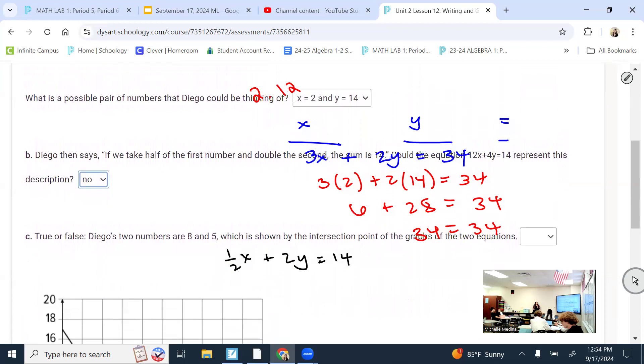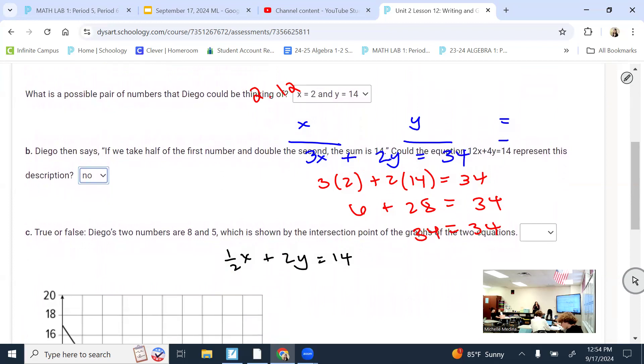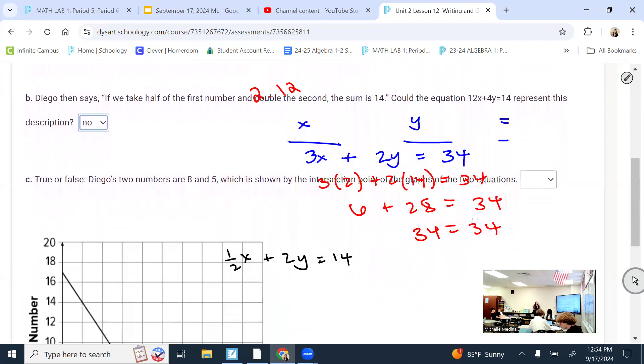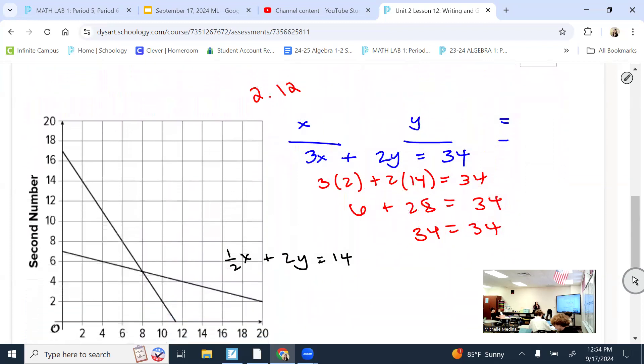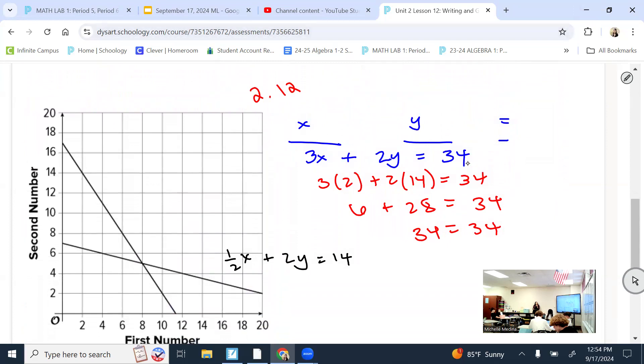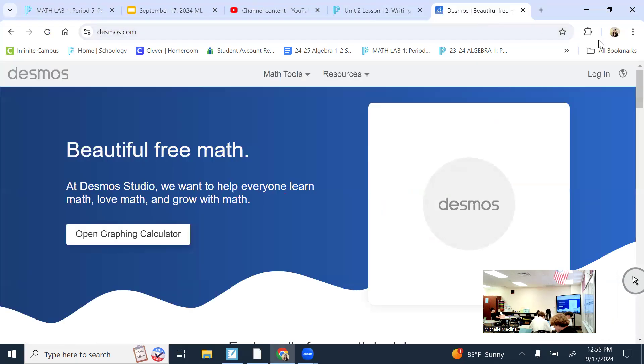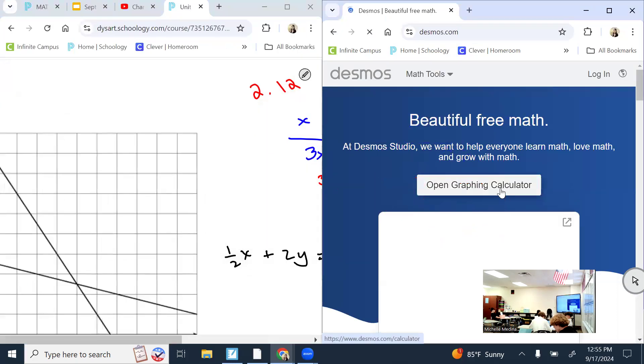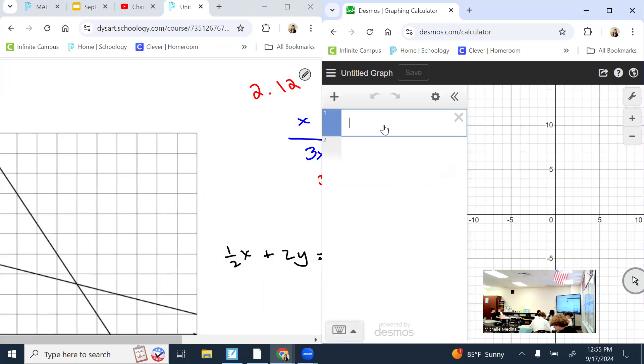So true or false, Diego's two numbers are 8 and 5, which is shown by the intersection of the graphs of the two equations. These would both have to be graphed. Today we really focused on converting it into slope intercept form, which is a skill you need. I mean, you need to be able to graph that by hand. But if this were me on a test and knowing what I know, I would probably use Desmos to confirm that answer. So the hard part is knowing whether or not your equations are correct.